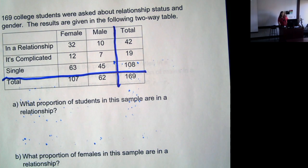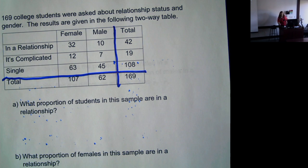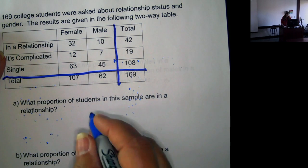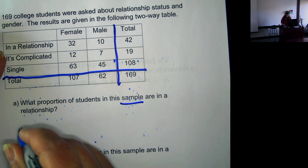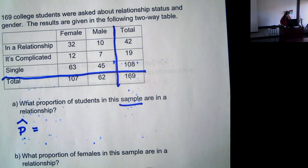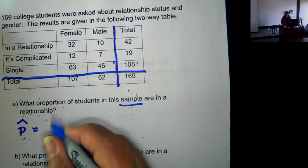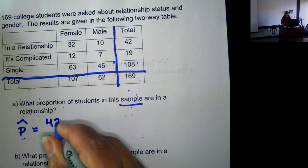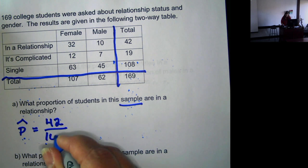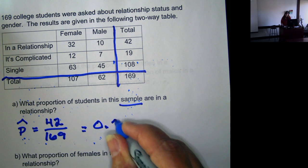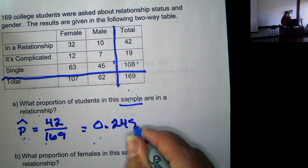So we want to know what proportion of students in this sample are in a relationship. Again, it's a sample, so we use p hat. And in a relationship, there were 42 in a relationship out of the total of 169. And if we divide it out, we have 0.2485.